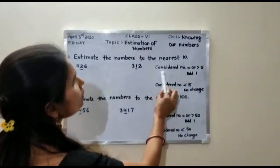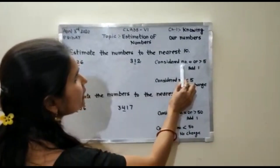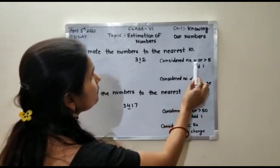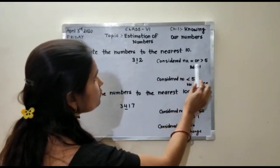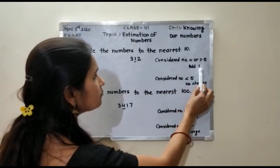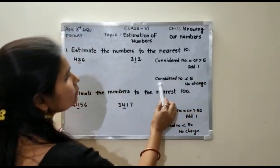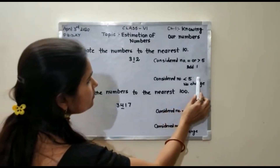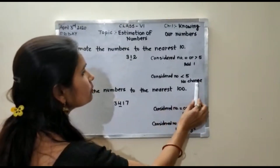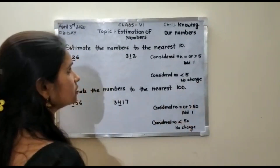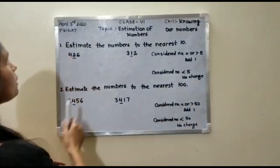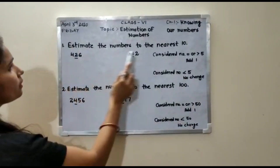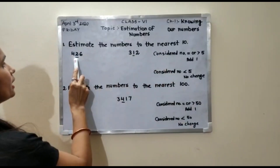Now, the rule: if your considered number is equal to or greater than 5, then you will add 1. If your considered number is less than 5, there will be no change. First of all, you will underline the tens place.